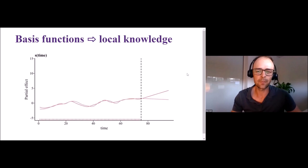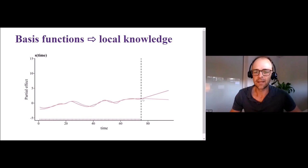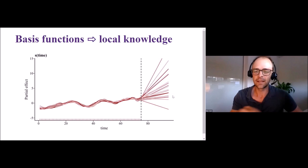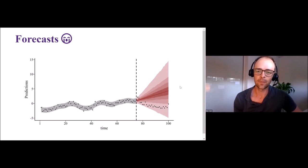Looking at individual realizations of this spline makes it clearer: as soon as we start extrapolating, each curve just continues wherever it stopped — if it wiggled slightly up at the end, it extrapolates linearly upward forever; if slightly down, it goes down forever. Looking at many realizations reveals how that uncertainty envelope is formed. What's happening in the extrapolation horizon doesn't resemble at all what the spline learned in the historical period, resulting in very bad forecasts about what's actually likely to happen.